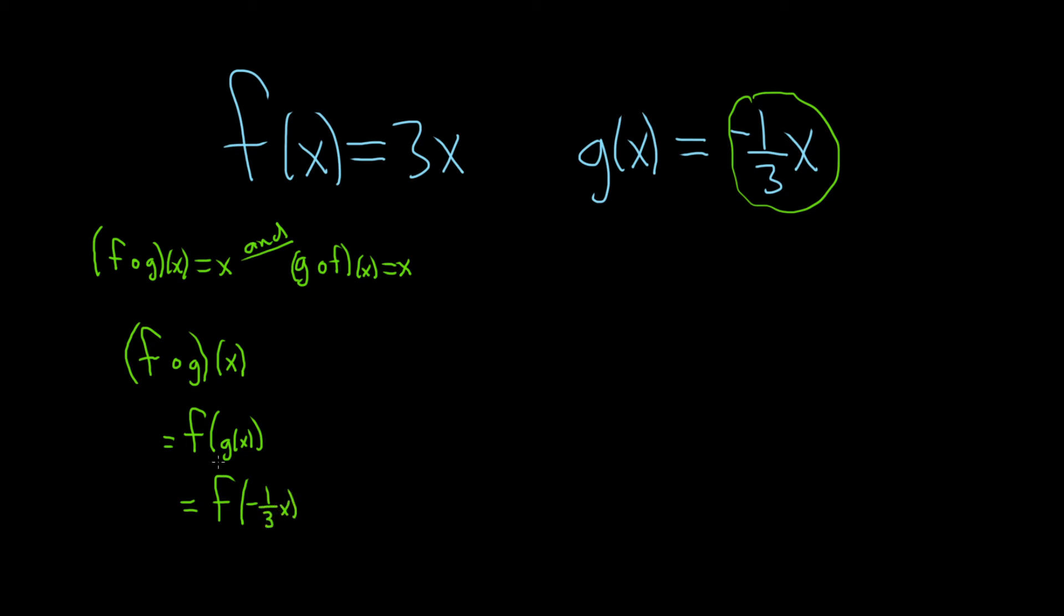f of x is 3 times x. So here this is our x, this whole thing. So it'll be 3 times negative one-third times x. Because that's your x, instead of 3x it's 3 times that. And these cancel and so we get negative x.